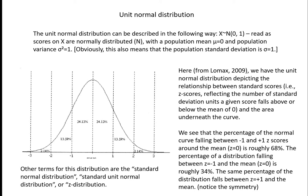The distribution most closely aligned with z-scores is the unit normal distribution. The unit normal distribution basically has a mean equal to zero and a standard deviation equal to one. And that also means the variance is equal to one. Here I have a depiction of the unit normal distribution reflecting the relationship between standard scores — that is, z-scores — and the area underneath the curve.